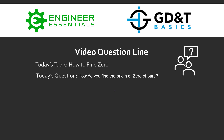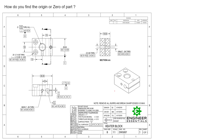Hey everybody, Jason here again with the GD&T Basics video question line. Today's topic is how to find zero. The question that was submitted is: how do I find the origin or the zero of a part? So let's take a look at this example drawing to see what we can do in order to find the zero of this part. One thing I want to get out of the way before we get started is there's not necessarily only one zero to a single part.